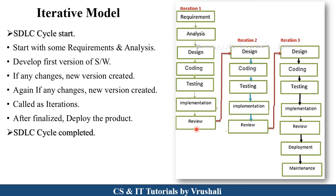Simply put, in the iterative model you can develop a product in multiple iterations. Here, customer requirements are not fixed as in the waterfall model — customer requirements are continuously changing, with new updates and new versions. So you can build a product as per the new iteration and new features.